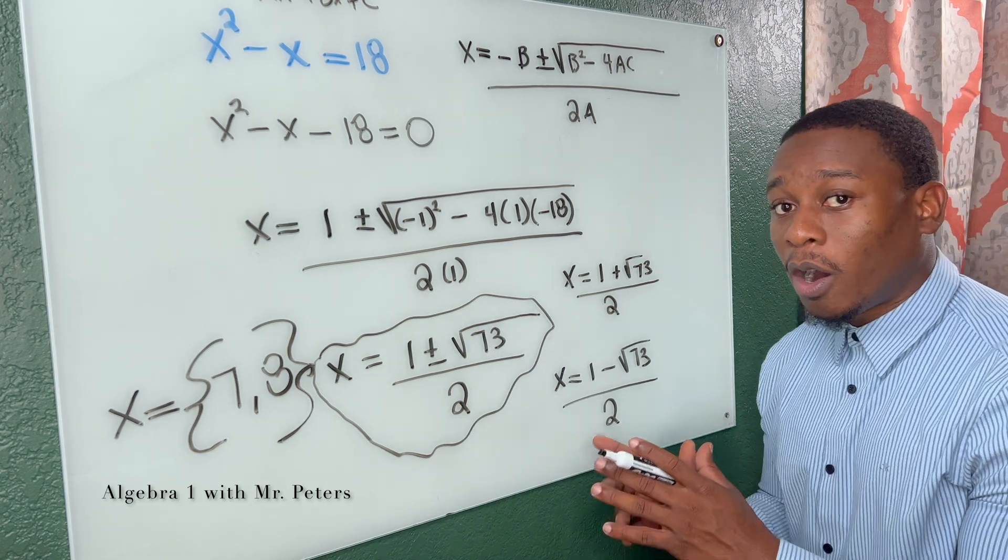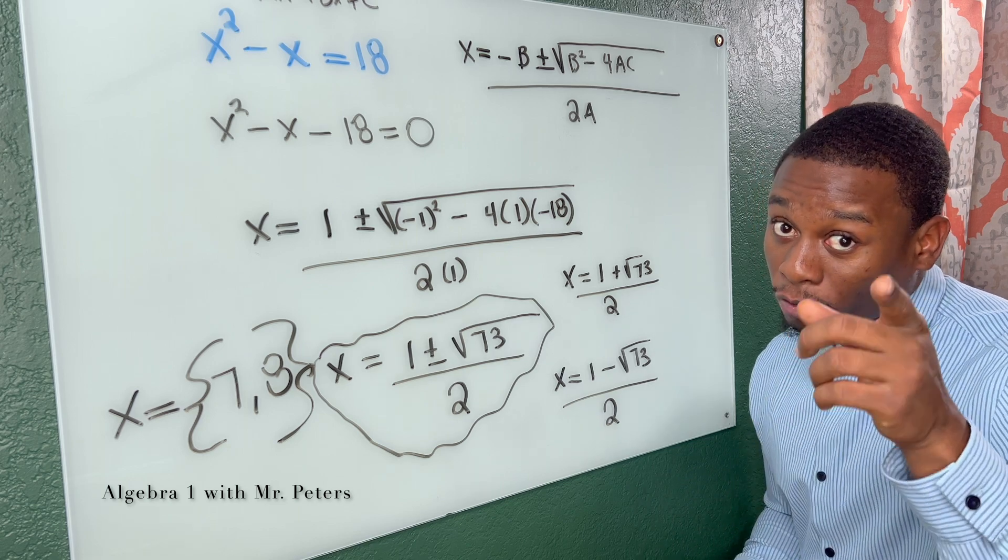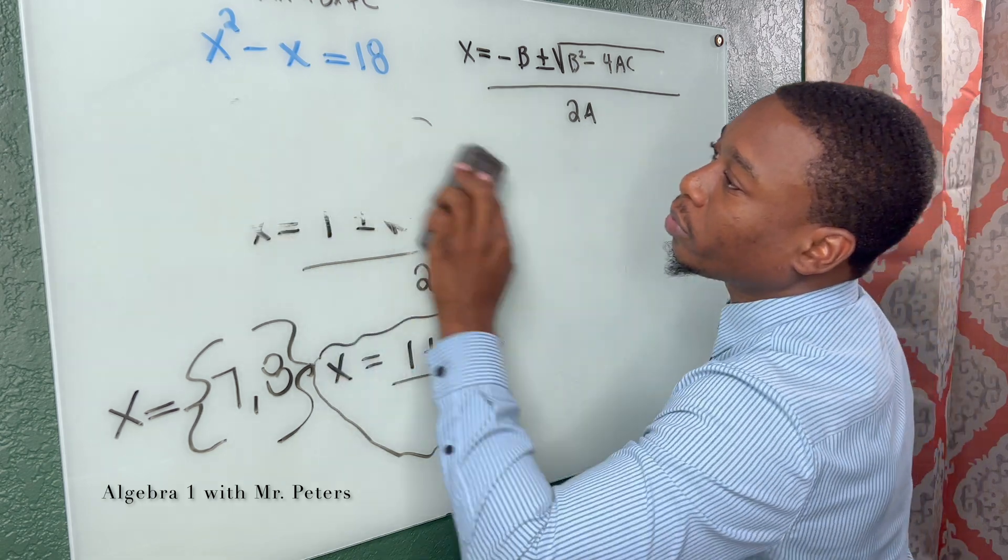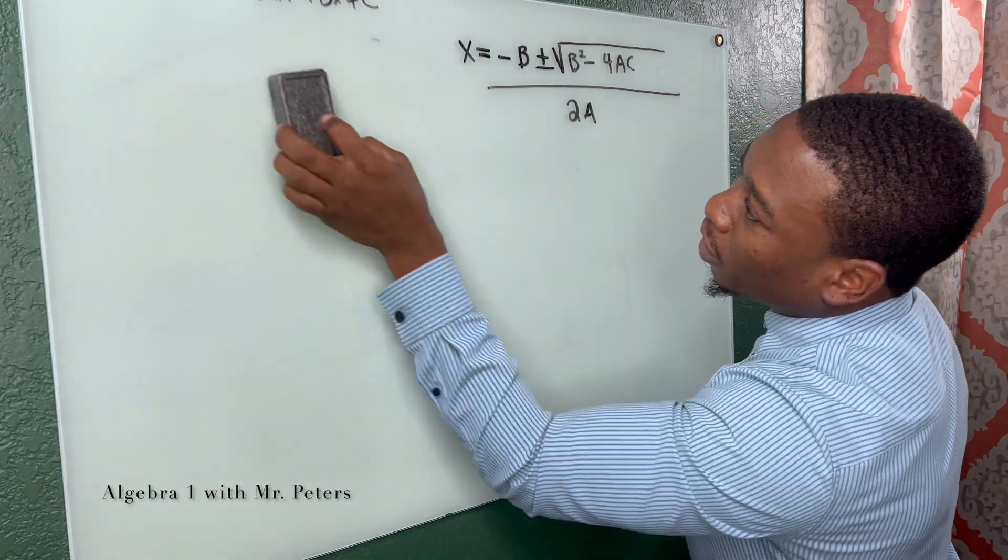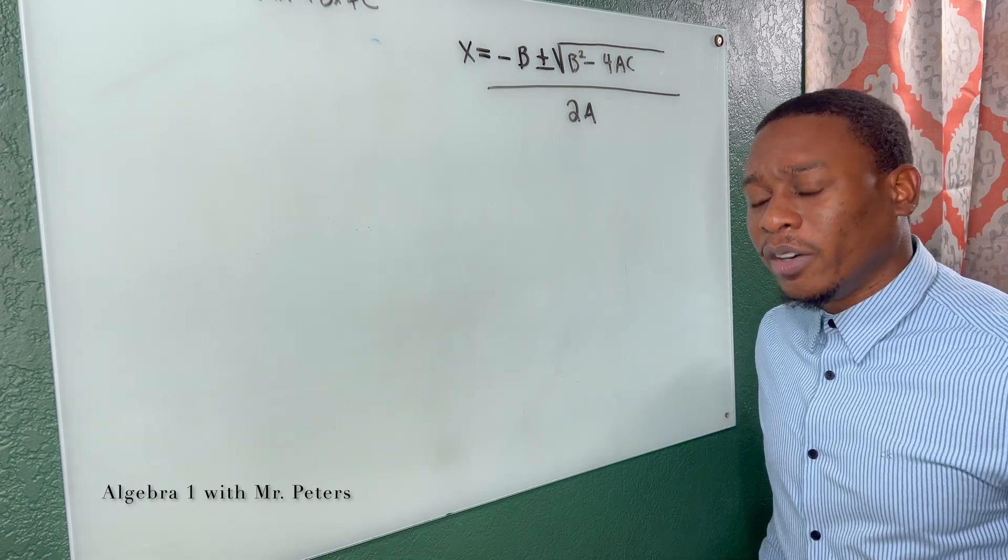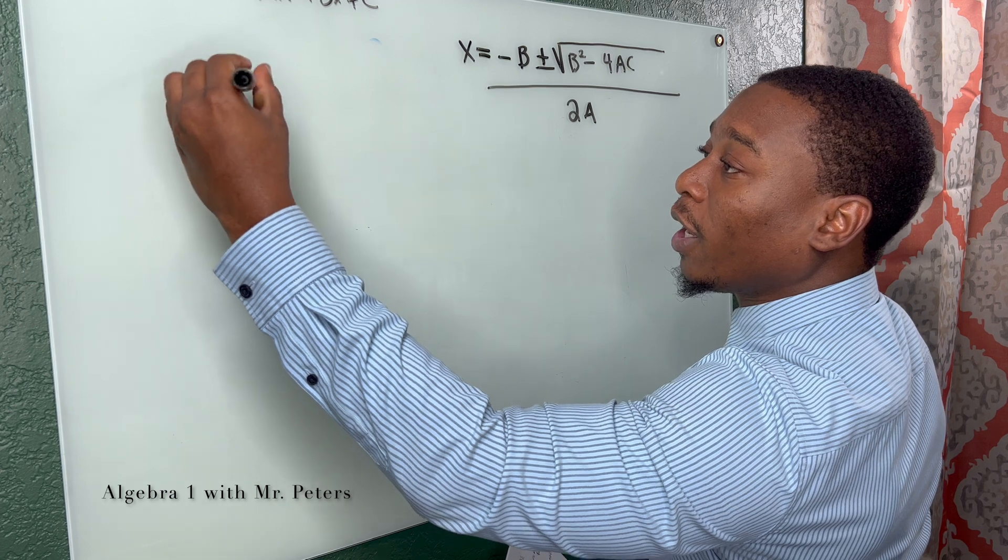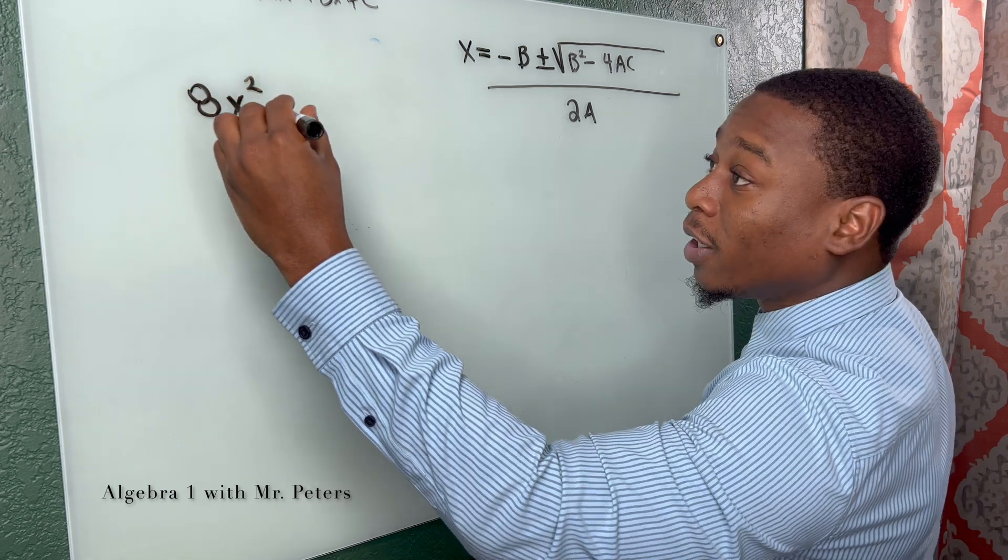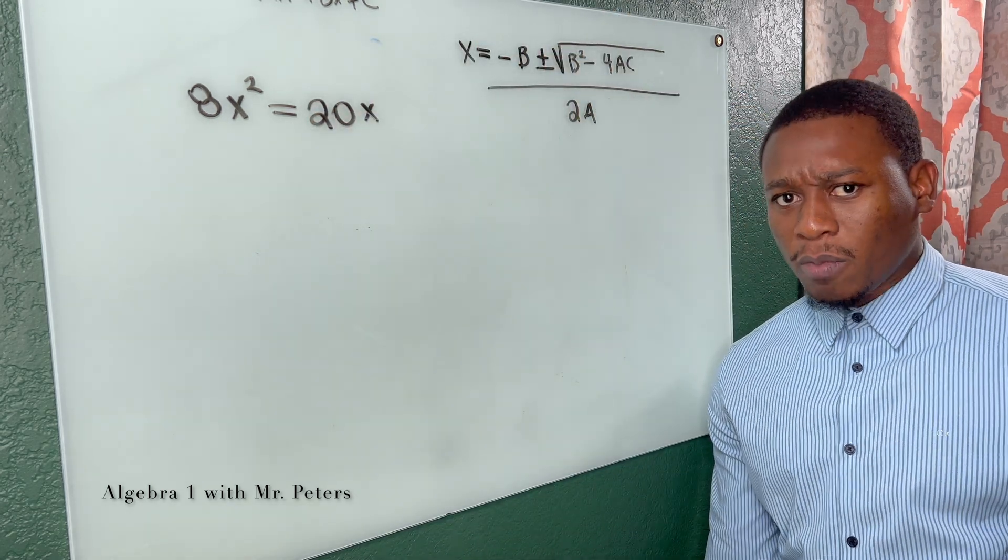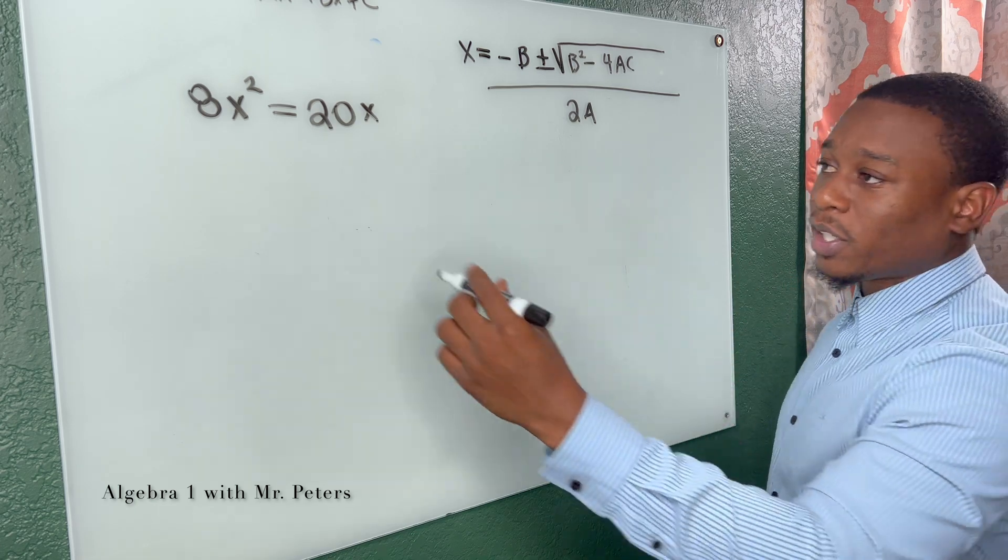But before we wrap this video up, I want to show you one more thing on this method that's very important, especially when you want to solve correctly. So let's erase and go back through it. So the second equation does something that I know you students don't like, and I hate it too, I'll be honest with you. So to give us the equation, 8x squared is equal to 20x. So the first thing you're saying is, hold on Peters, there's only two terms. You're absolutely right.